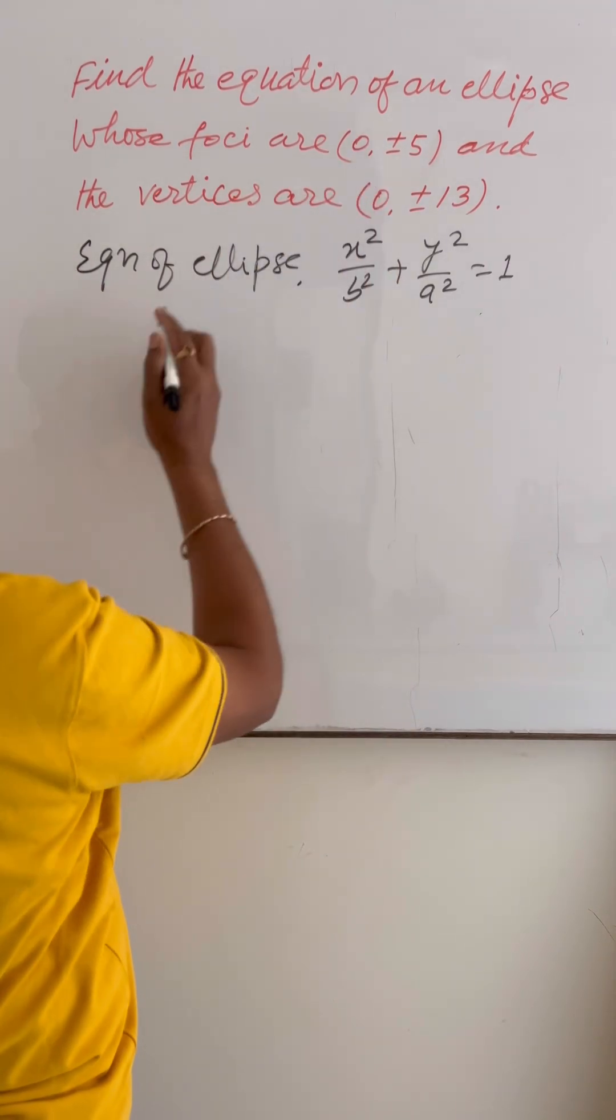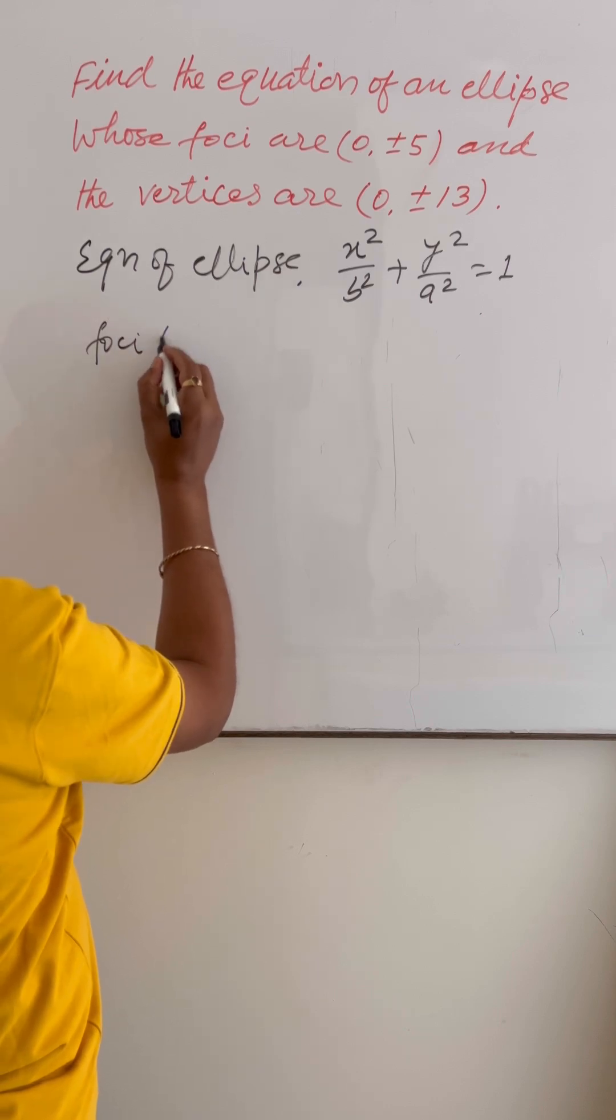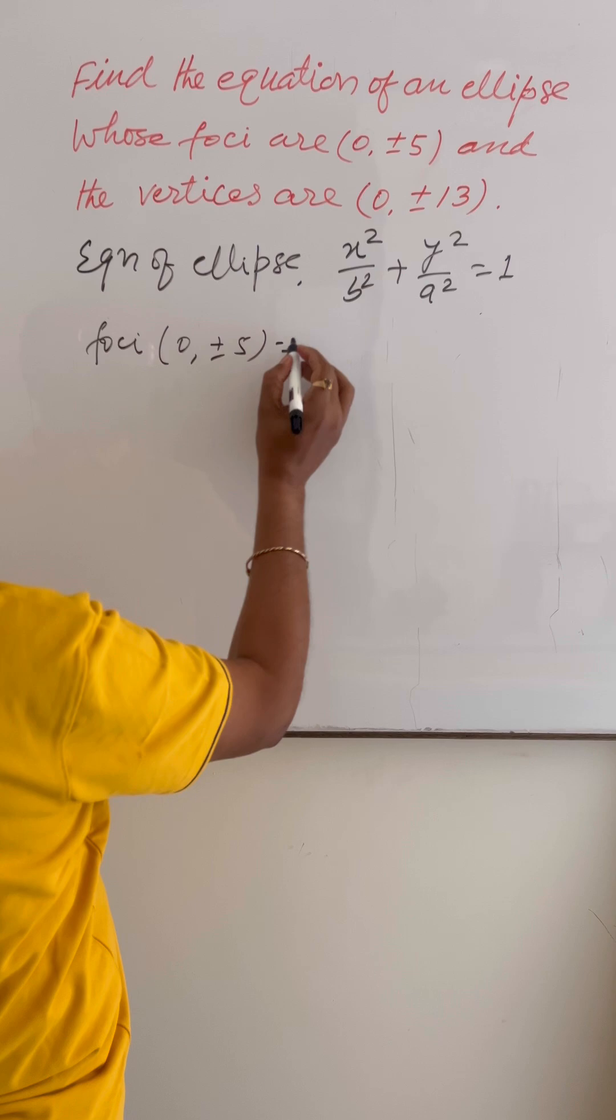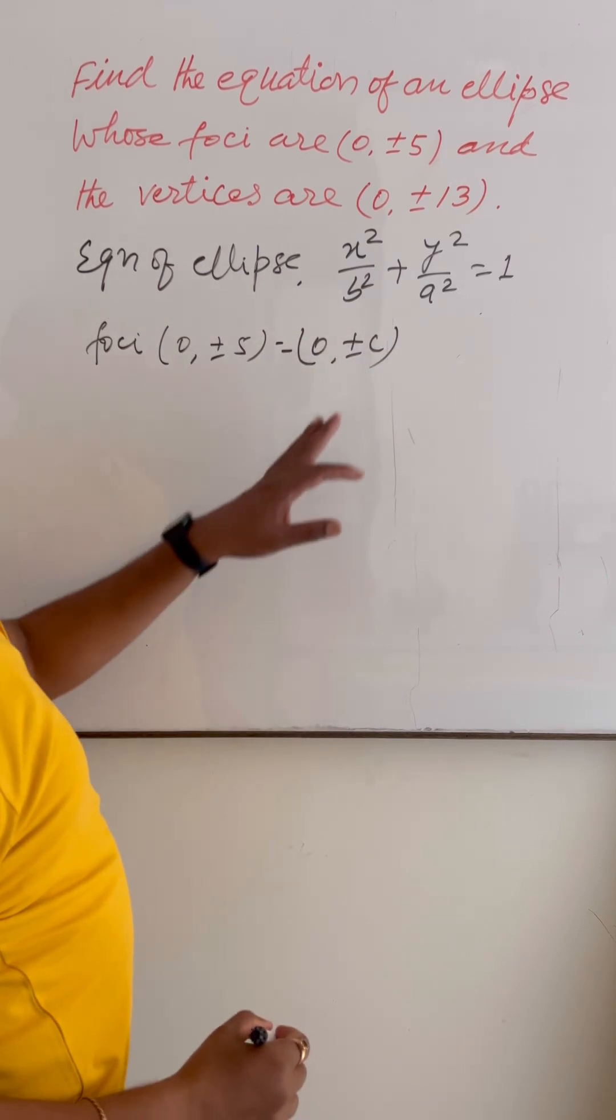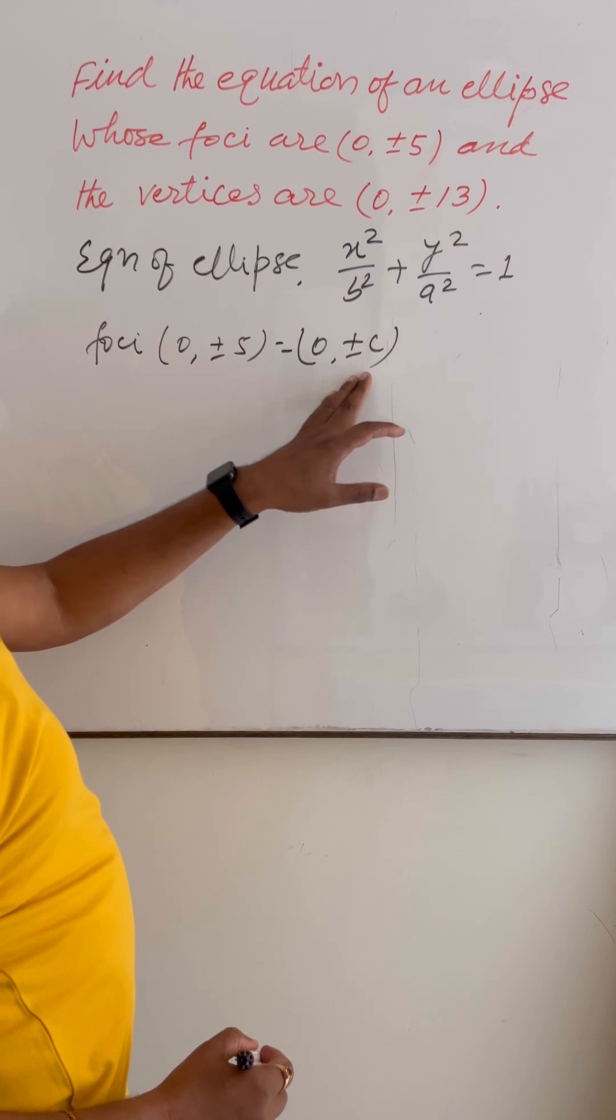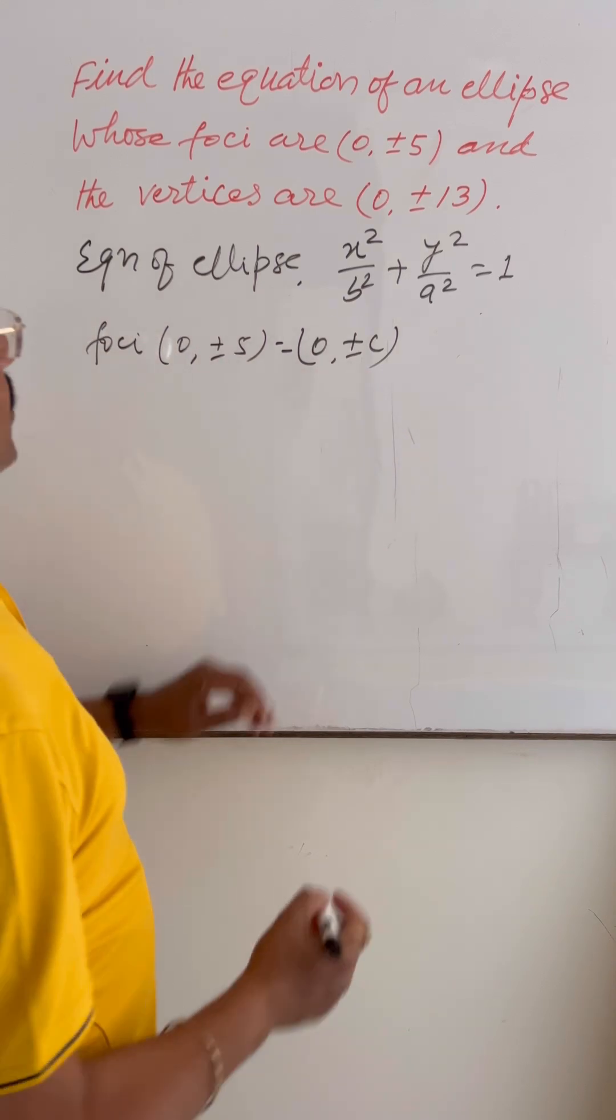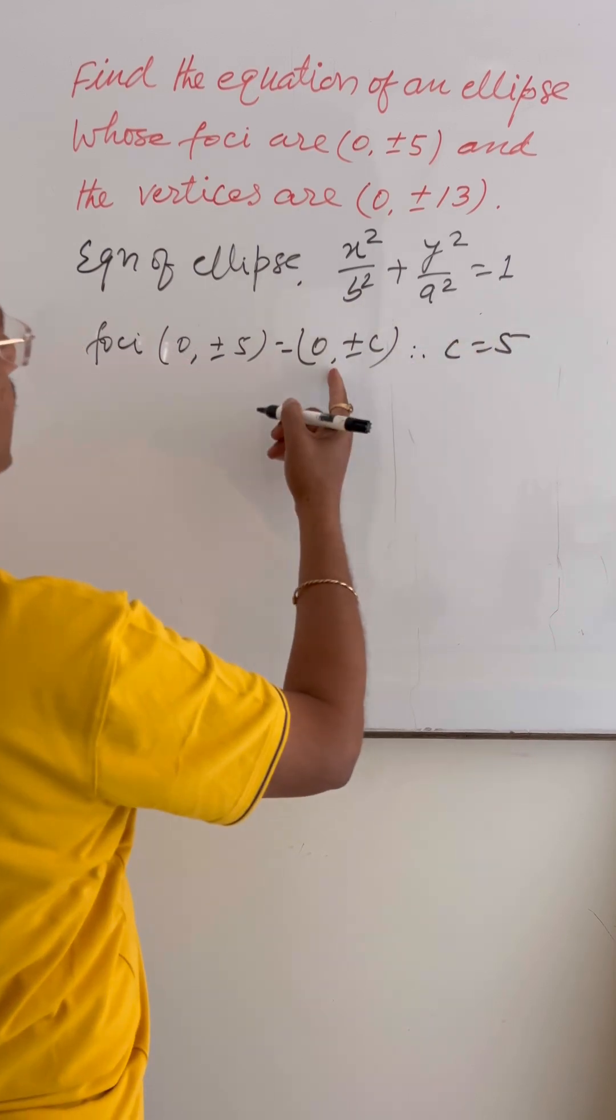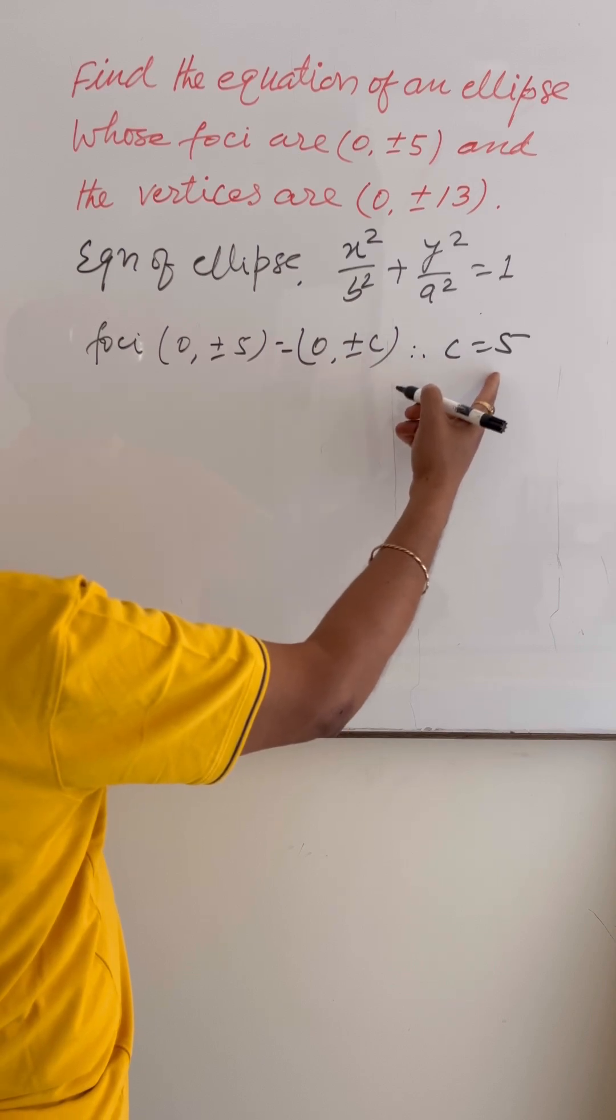foci are (0, ±5), and this is (0, ±c). We know coordinates of foci are (0, ±c) in a vertical ellipse. So comparing these coordinates, we are getting c = 5.